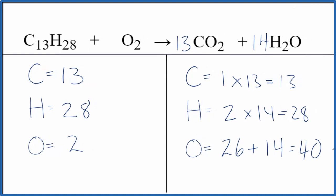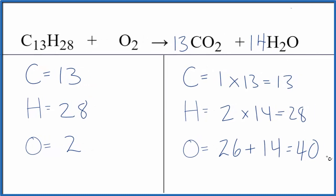All right. So it's actually pretty easy to fix things at this point, because we have 40 oxygens here and only 2 here. We left the oxygen until last, so when we put a 20 here, 2 times 20, that gives us 40. We're done. This equation is balanced.